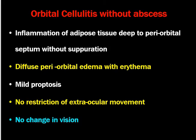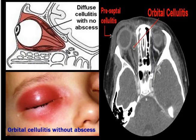Orbital cellulitis without abscess: there is cellulitis but no abscess in the orbit. It is inflammation of adipose tissue deep to the periorbital septum without suppuration. There will be diffuse periorbital edema with chemosis, redness, and mild proptosis, but no restriction of extraocular movement and no change in vision. On CT scan, diffuse orbital cellulitis can be seen with no abscess formation.